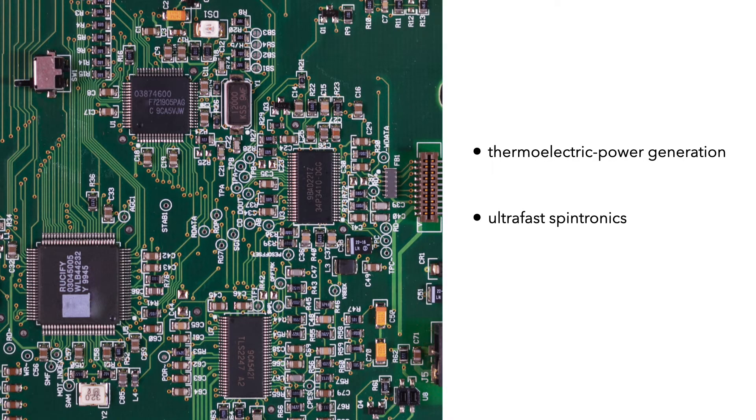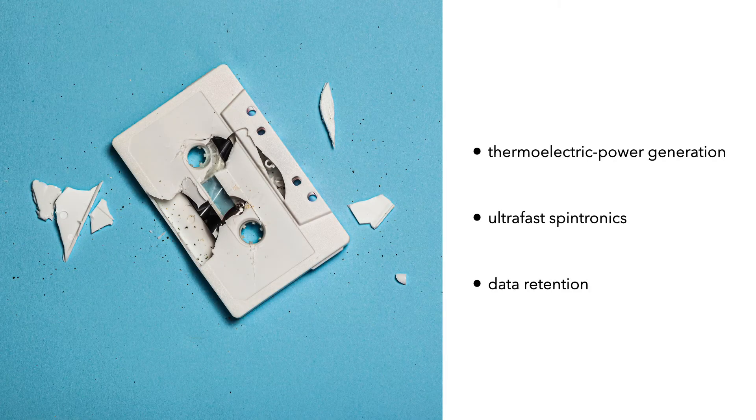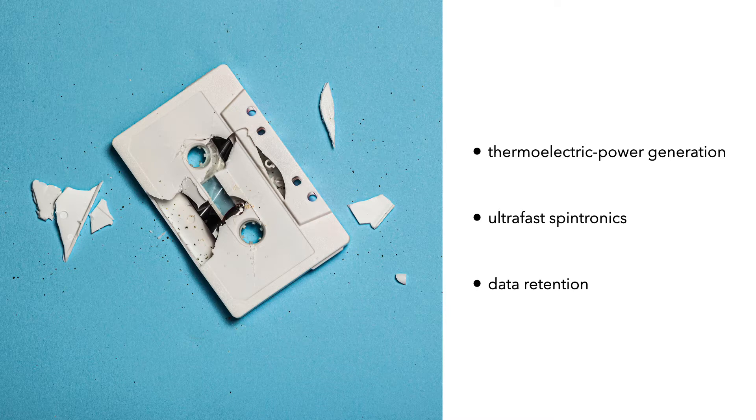Additionally, so-called antiferromagnetic domain walls can flip at high speed, which opens the door for ultra-fast spintronics. What's more, these complicated magnetic structures are very robust against any disturbance from their environment, which might be useful for new kinds of data retention.